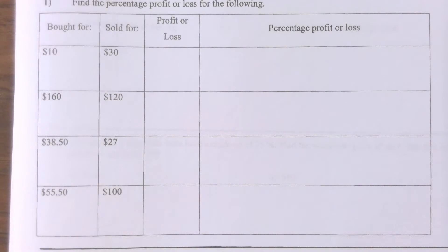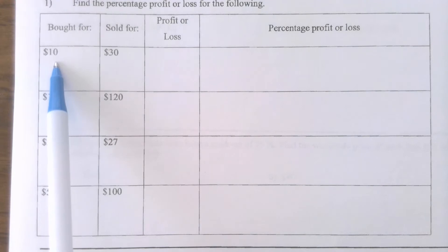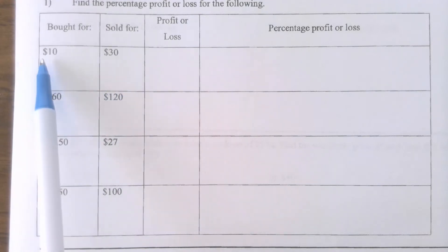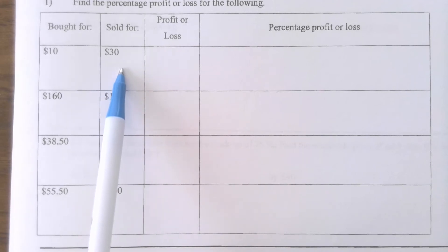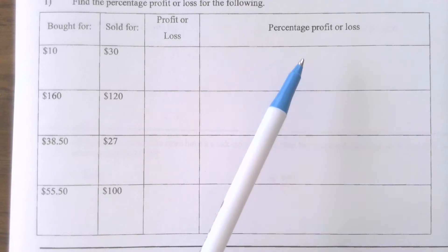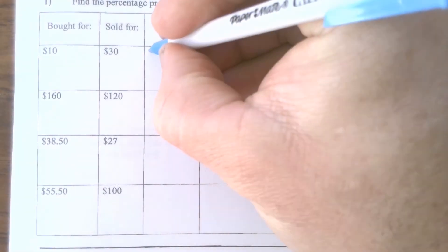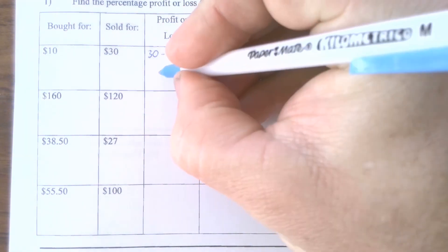Question 1 is very similar to the questions we were getting asked at the end of the fundamentals test. We'll do a profit one and a loss one to be nice and clear. I'm looking to see whether I've made a profit or a loss. I bought something for $10 and sold it for $30, so I've made a profit, and I need to work out what that percentage is. Selling price minus purchase price gives me a profit of $20.